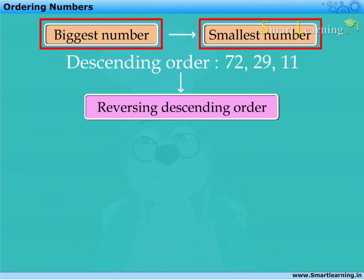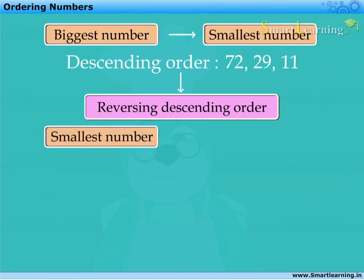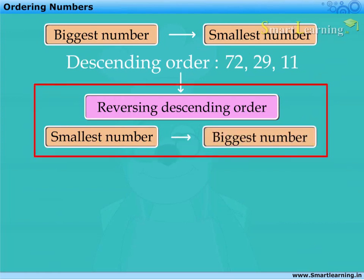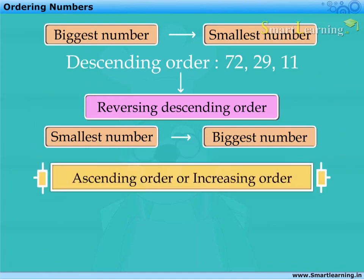Reversing this order, we get the smallest number first and the biggest number at the end. This arrangement of numbers is called ascending order or increasing order.